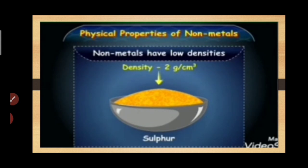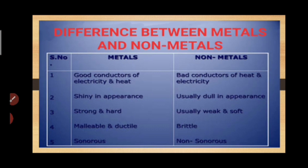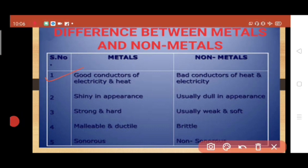So these are a few properties of nonmetals. Now let's move on to the difference between metals and nonmetals. Metals are good conductors of electricity and heat, while nonmetals are bad conductors. Metals are lustrous — they show a shiny appearance — while nonmetals are usually dull. Metals are strong and hard; nonmetals are usually weak and soft.